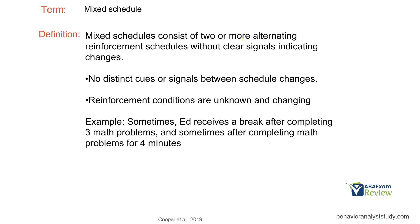Mixed schedules, like multiple schedules, involve two or more alternating reinforcement schedules. However, with mixed schedules, there is no clear signal — reinforcement conditions are unknown and changing to the learner, with no distinct cue when the schedule changes. For example, sometimes Ed will receive a break after completing three math problems (FR3), and sometimes after completing problems for four minutes (FI4). Ed doesn't know what schedule is available until he's reinforced — he just keeps working and receives reinforcement after a certain number of responses or time, in an alternating or random fashion.